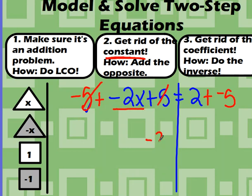So on this side, I've got negative 2x. And then 2 plus negative 5, they're not on the same team, so they battle. It's going to be negative 3. The last step that I need to take is to get rid of the coefficient, and I need to do the inverse. The inverse of times negative 2 is divided by negative 2. So whatever you do to one side, you do to the other.